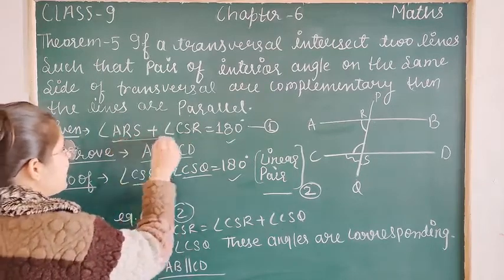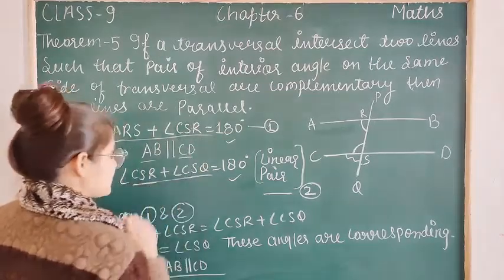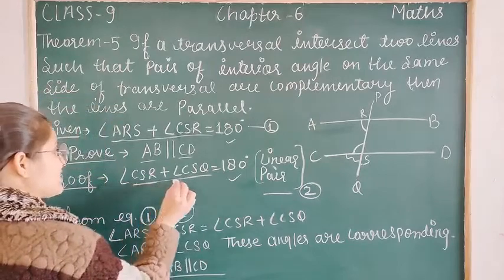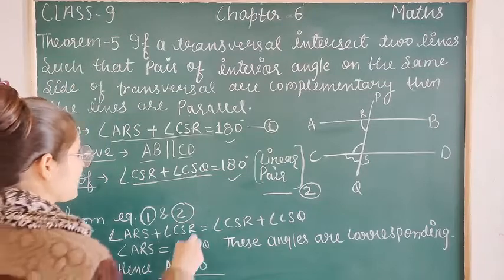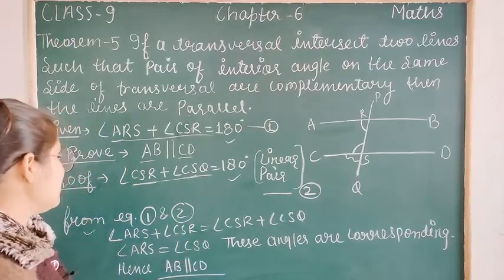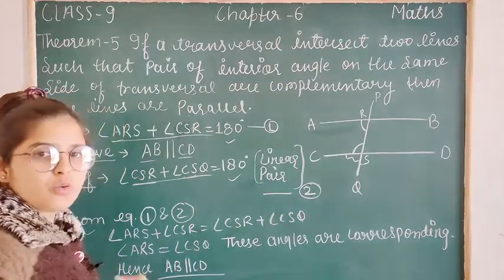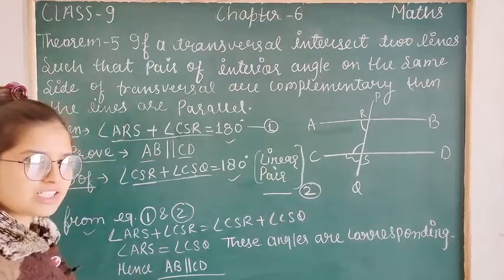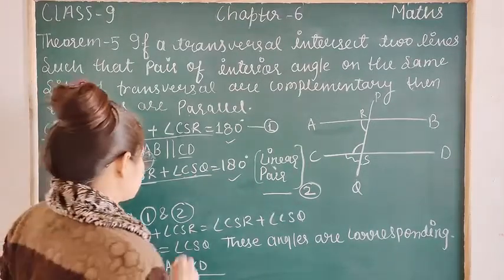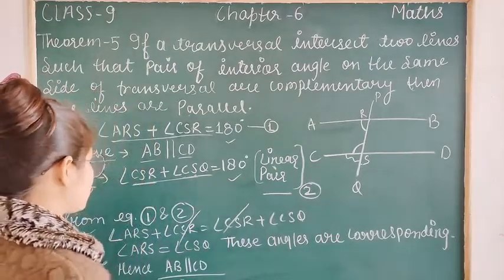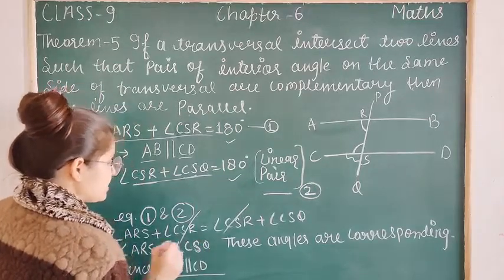We draw angle ARS plus angle CSR. Using the common angle, we cancel the same angle from both sides. Therefore, angle ARS equals angle ASQ.